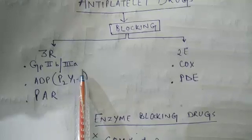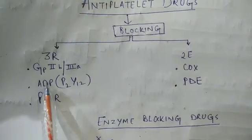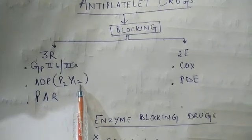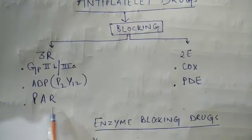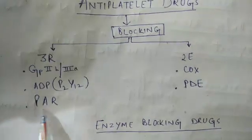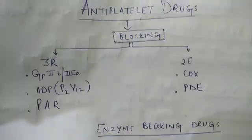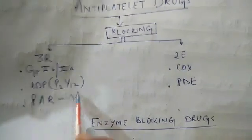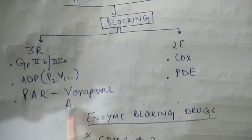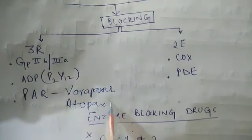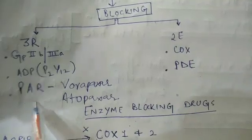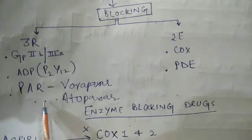The receptors which are blocked by the antiplatelet drugs are glycoprotein IIb/IIIa receptors, ADP receptor which is P2Y12 receptor, and also there is another receptor - the protease activated receptors. The drugs in this group are Vorapaxar and Atopaxar.